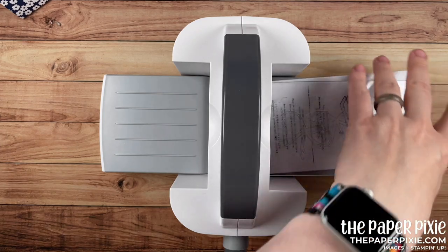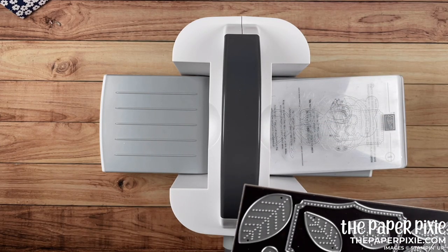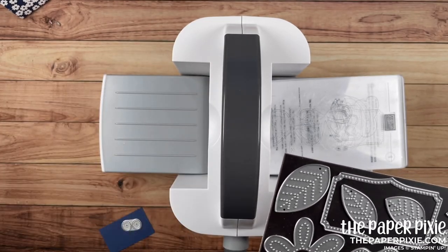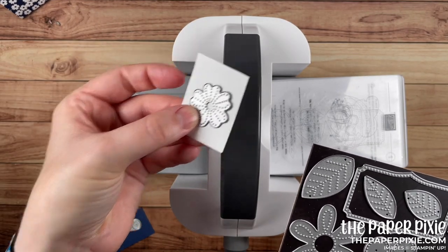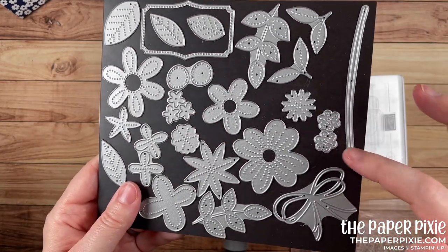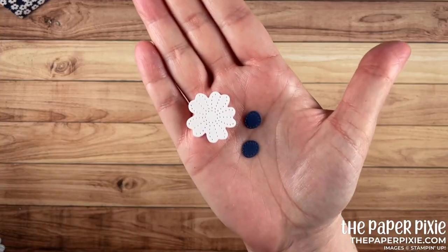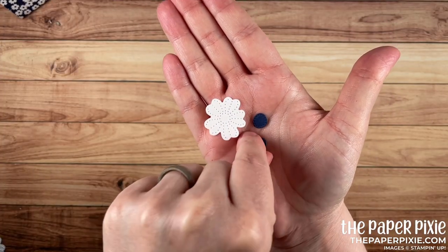I'm grabbing the mini stamp and cut and emboss machine. And from the Pierced Blooms dies, I'm going to cut one of the flower centers in Night of Navy. And then this flower in Basic White from this awesome set of dies. So there's what we end up with. I'm just going to use one of those flower centers.